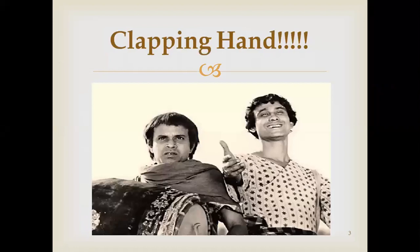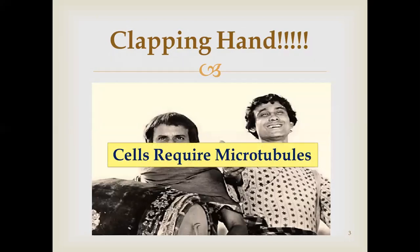These two figures, Gupi and Bagha, are very well-known personalities in Bengal. They have a unique ability — by clapping their hands, they can visit anywhere. But this is something that happens in comics, not in the real world. In reality, we need some path or vehicle to move, and cells also require a path for movement — microtubules.